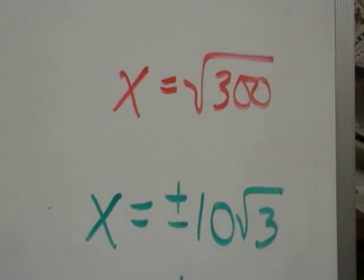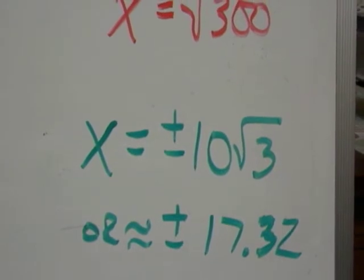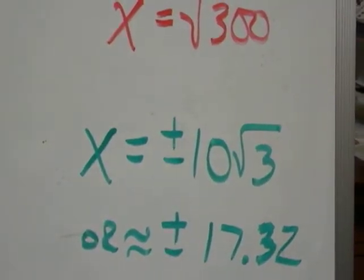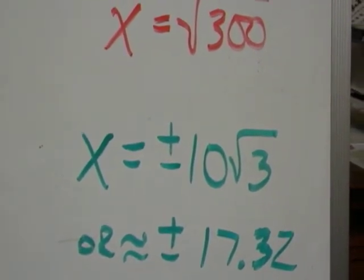Or if you'd rather have a decimal answer, it's approximately plus or minus 17.32. Because remember, when you square a positive, it's positive. And when you square a negative, it's positive. And that's why there's really two answers, the positive and the negative.